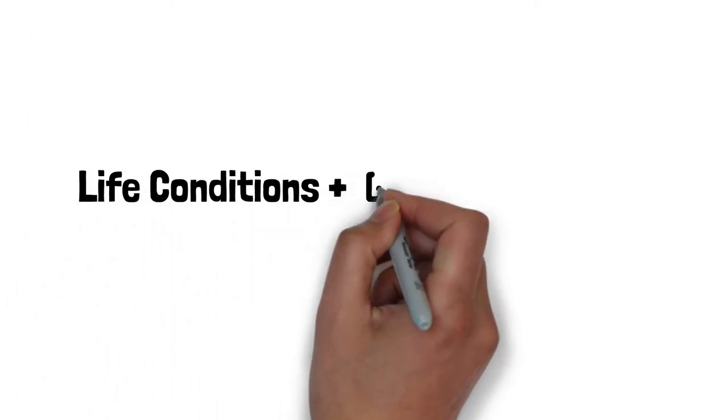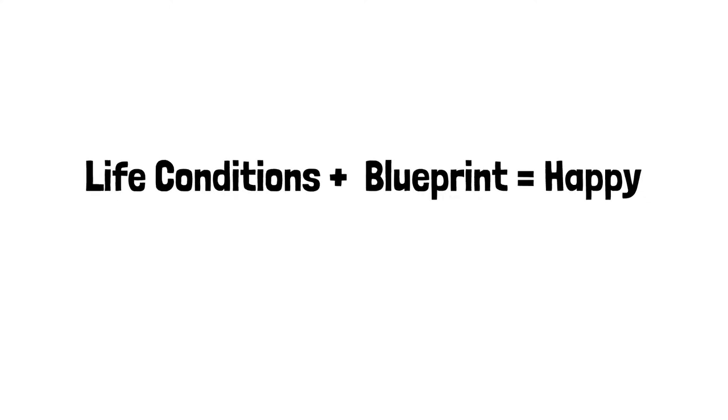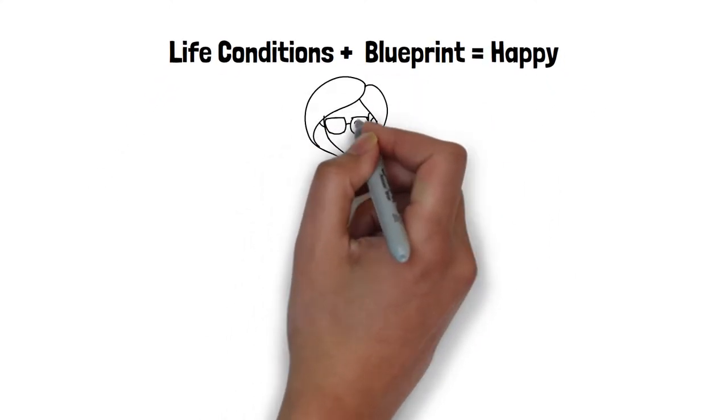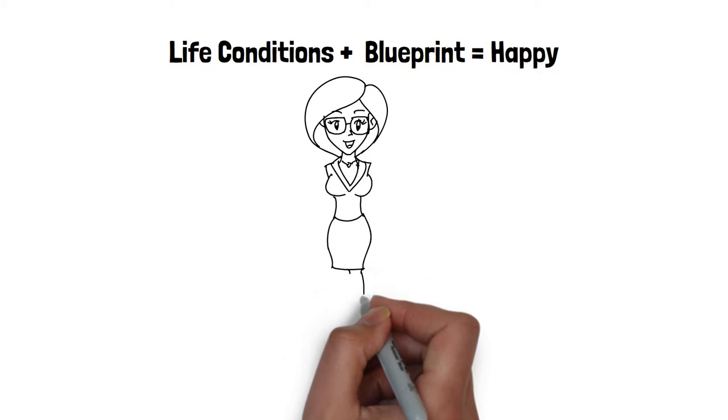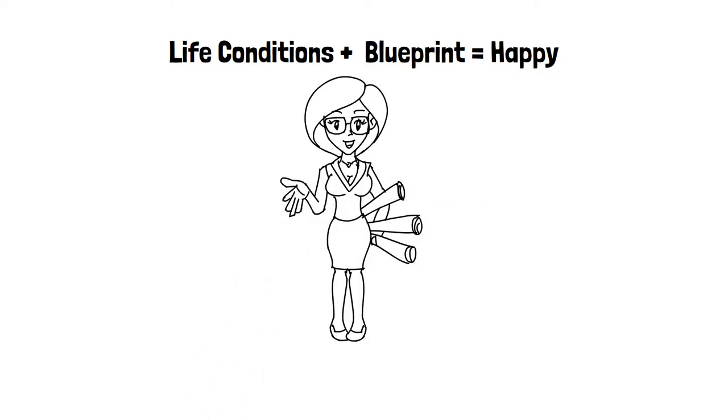To be happy, match life conditions with blueprint. Tony Robbins says that if your life conditions don't match your blueprint, then you're unhappy. To help someone, you must either change their living condition or change their blueprint. Life conditions plus blueprint equals happy. Pretty simple right? So how do we do this?